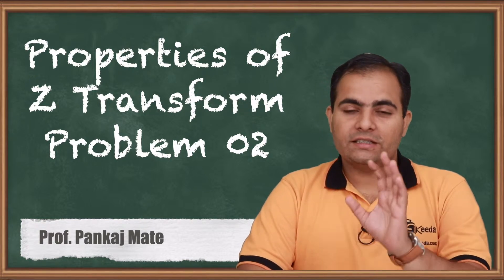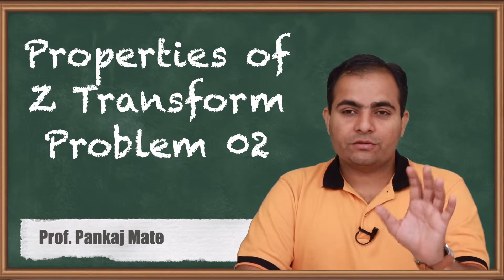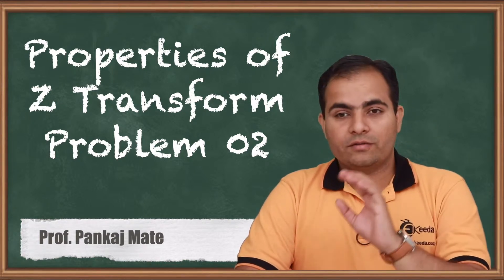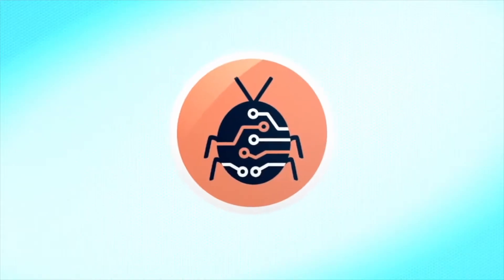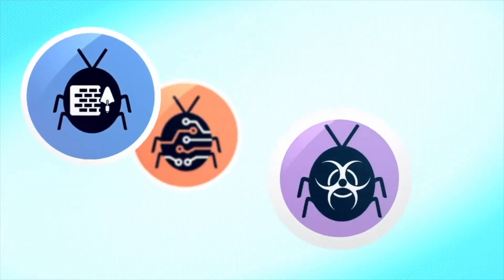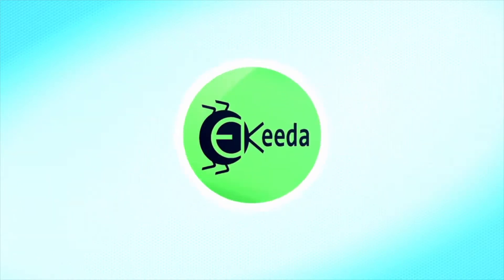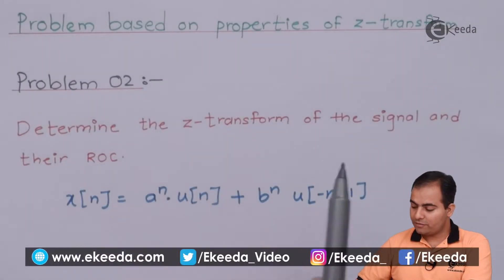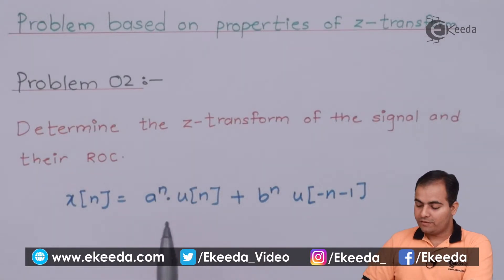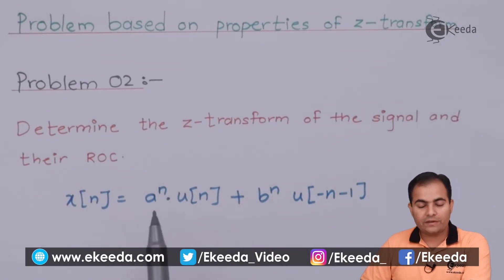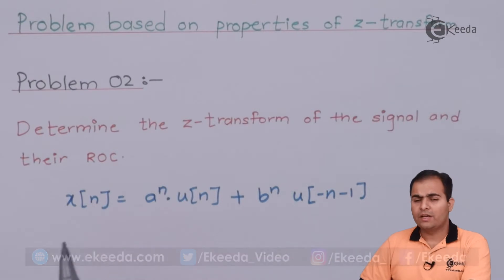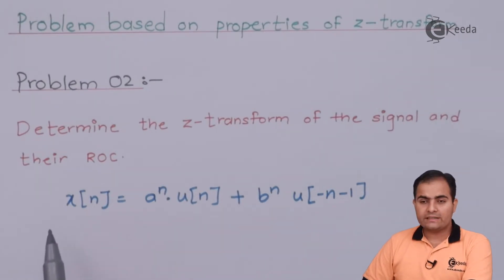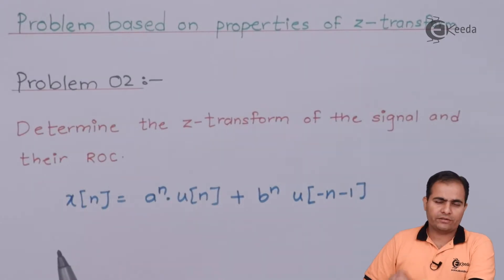Before moving to the solution, just go through all the properties we have derived till now. The question asks us to determine the Z transform of a signal and its ROC — first we find the Z transform of the whole function, then we move on to the ROC. We can see that X has a two-sided ROC.